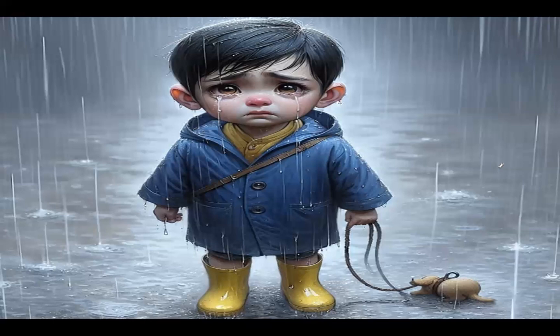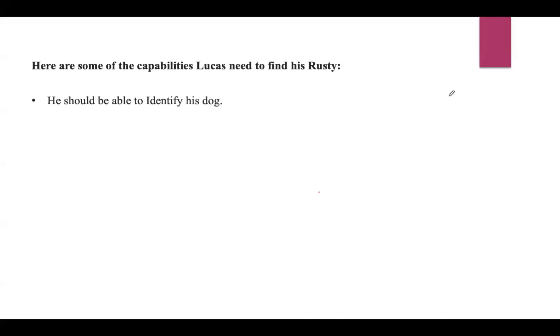He needs some capabilities in order to find his dog. Here are some capabilities Lucas needs to find Rusty. First, he should be able to identify his dog — if he sees any animal, he should be able to identify if it is a dog or not. If it is a dog, then he should identify whether it is his dog or not. After that, he should be able to make a strategy in order to find his dog.